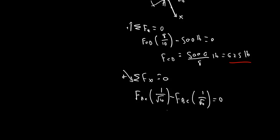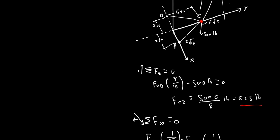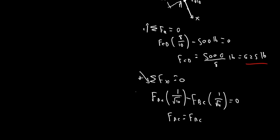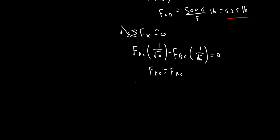So, multiply both sides by root 10, and add Fbc to both sides, we get Fac equals Fbc. It has to, in order for this to be true. So, therefore, we get that the force in these two cables is the same. Now, that makes the solution for sigma Fy so much easier, because we'll have only one unknown. And I'll show you why.